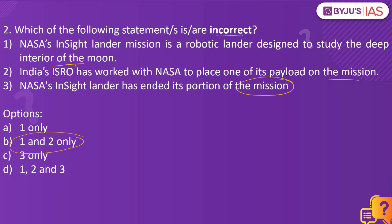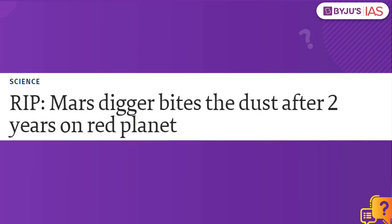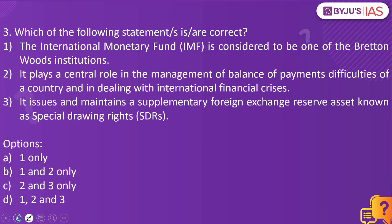Why? Because NASA's InSight Lander mission is not related to the Moon but instead it is related to Mars. Also remember, ISRO has no role to play in the InSight Lander mission — it is an exclusive domain of NASA. Why have we taken this practice question? Because of the reference given in The Hindu article, which is picked up from the website.